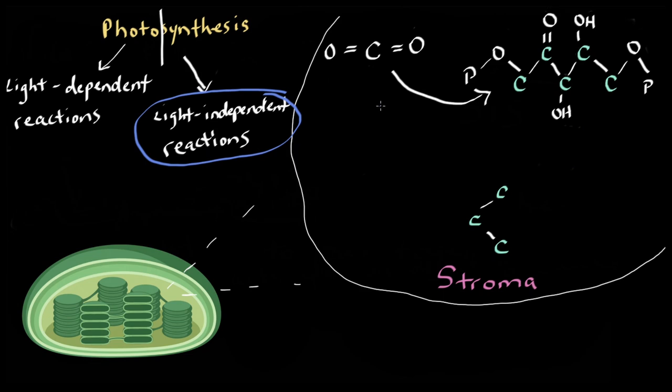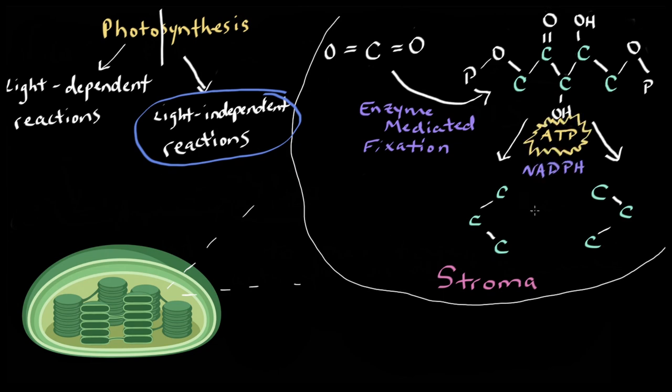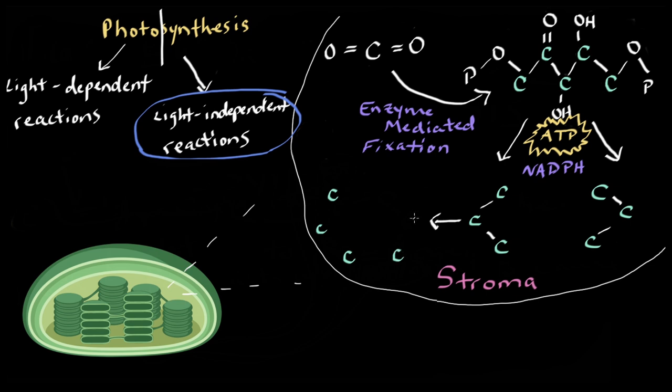In the light-independent reactions, a plant enzyme fixes carbon dioxide from the air into a chain of carbon. So ATP and NADPH, which were produced in the light-dependent reactions, provide the energy and the electrons to create two energetic reactive molecules that can be combined to make glucose or other useful molecules. And the beauty of it is that the byproducts of the light-independent reactions, ADP and NADP+, are shuttled off from the stroma back to the thylakoid for more light-dependent reactions, where they can be recharged and recycled for use again later.